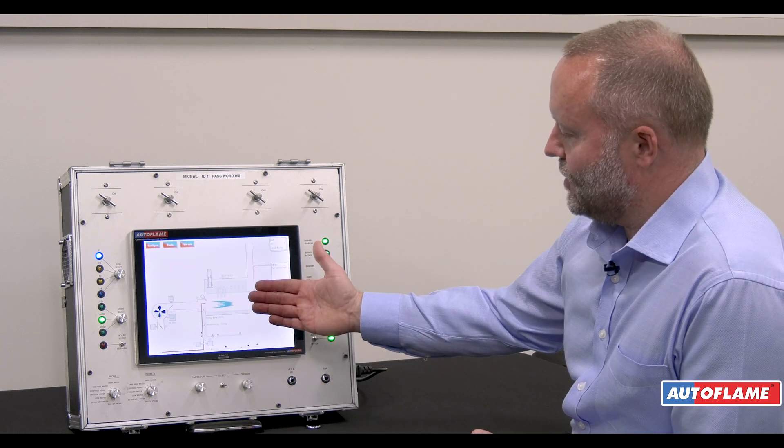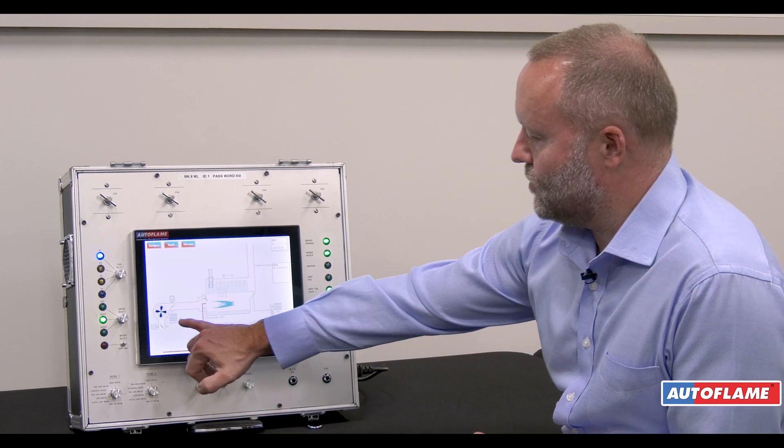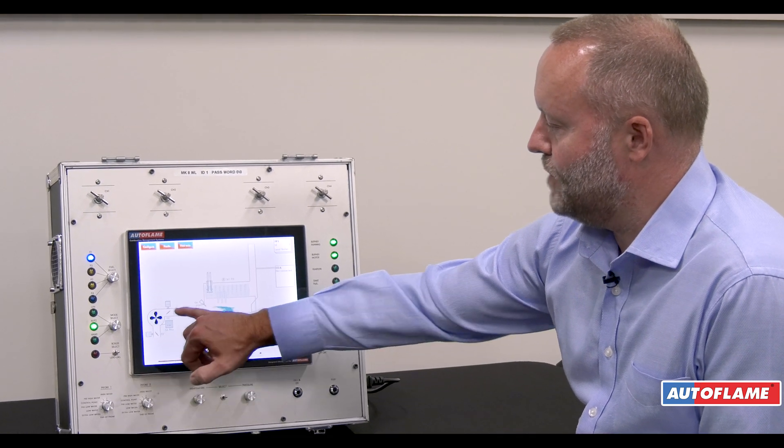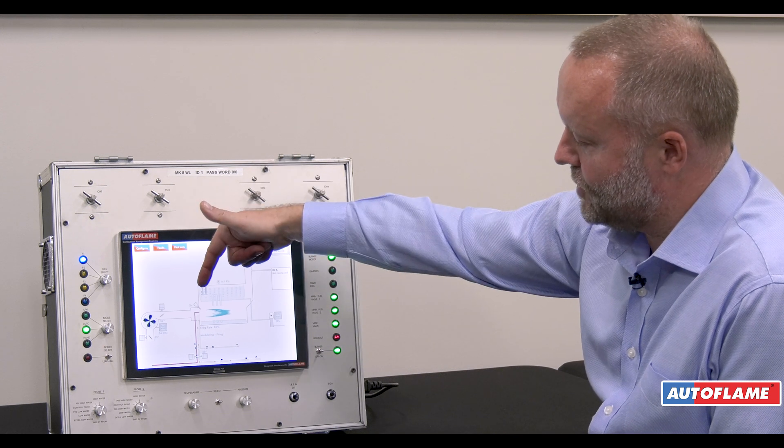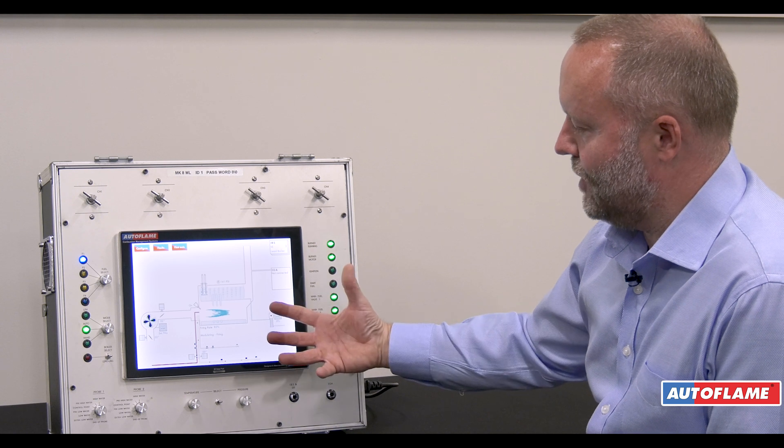In that type of application we add meters to the gas and also the air. Now these meters can either be mass flow or just a volume meter. If it's a volume meter we'd then need to measure the temperature of the combustion air and the natural gas and also the pressure, giving us a mass flow.